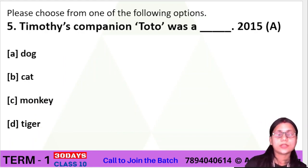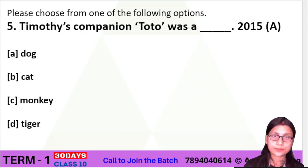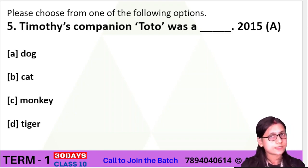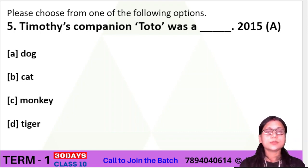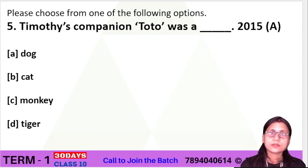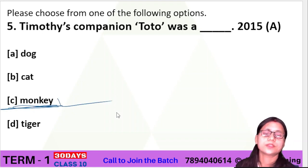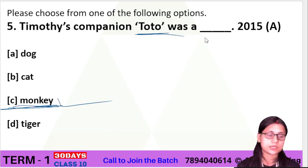Question number 5: 'Timothy's companion Toto was a dash.' This is a very important question. Timothy had two companions — one is a monkey and another is a puppy. Who was the monkey? Toto was the monkey. So the answer is that Toto was a monkey.